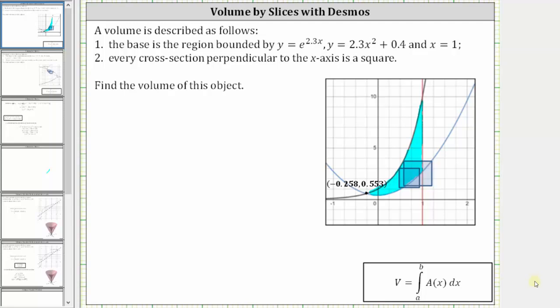So notice how the side length of each square is equal to the function value of the top function minus the function value of the bottom function. Where in our case, the top function is the exponential function, y equals e raised to the power of 2.3x, and the bottom function is y equals 2.3x squared plus 0.4. And therefore the area of each slice, which is a square, is equal to the square of the difference of these two function values.